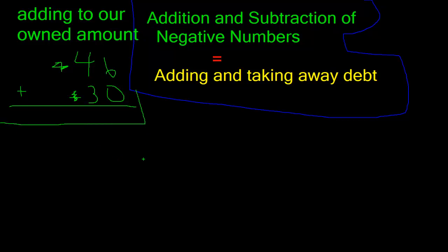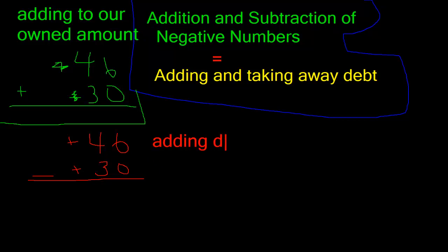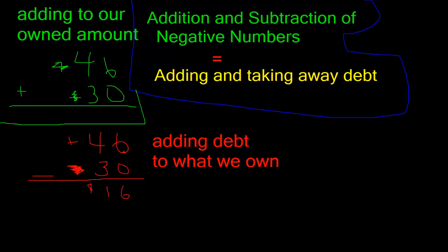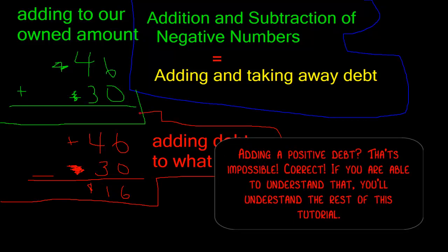Now let's look at subtracting positive numbers. Positive numbers are stuff that you actually own. Say we have 46 and we want to subtract positive 30. This is considered adding debt to what we own. As long as we have more money than the debt — the debt is 30 — we get 46 minus 30, which equals 16. We still have positive 16 because our owned money is more than the debt itself.